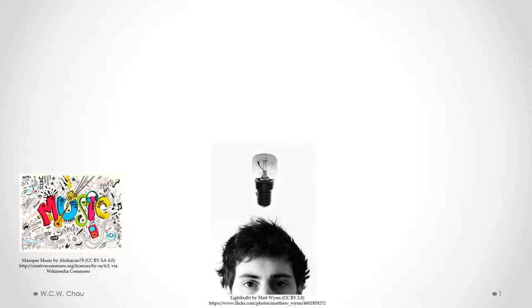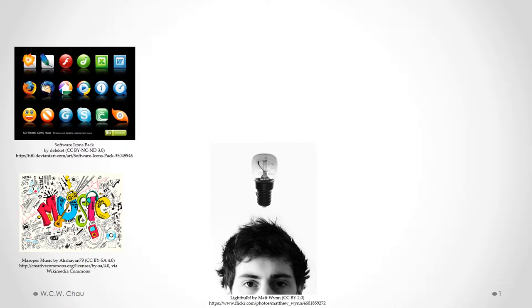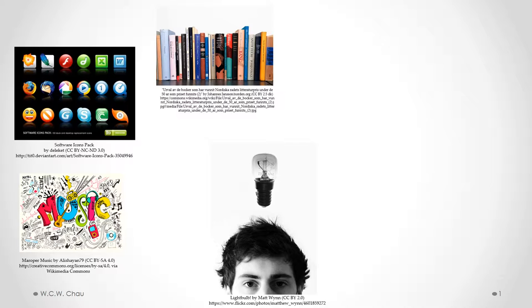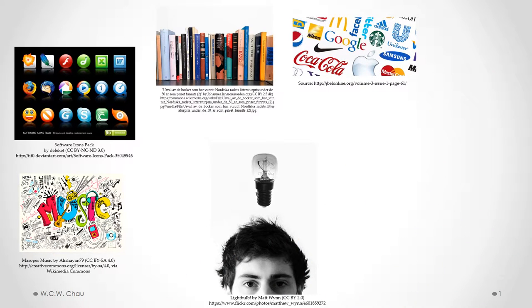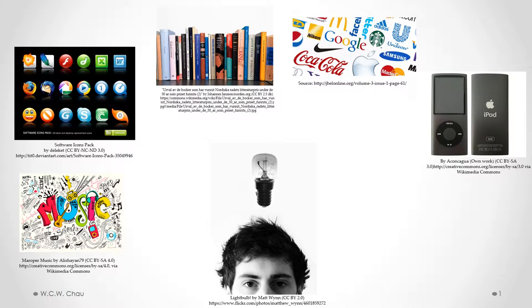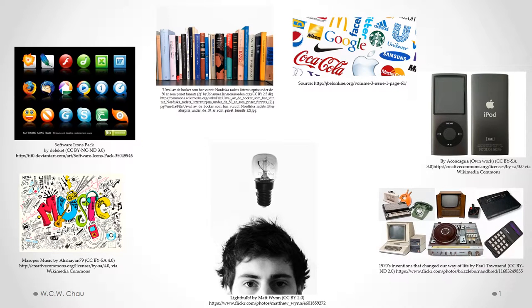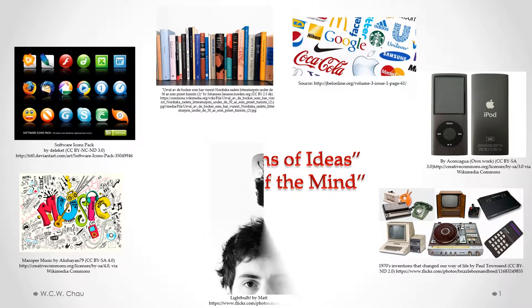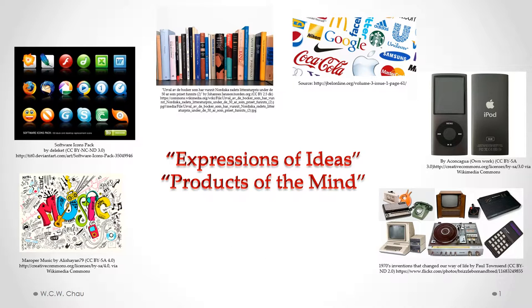When you have an idea and you act on that idea, that idea can become a number of different things. It can become music, an app or a piece of software that you design, a book or an article that you write, the name of a company or a logo for a company, the design of an object such as the original iPod design, or a brand new innovative invention. All of those things would be called expressions of your ideas or products of your mind — you've taken your idea and expressed it in tangible ways.